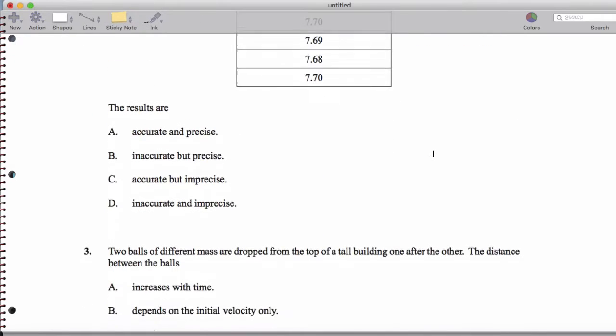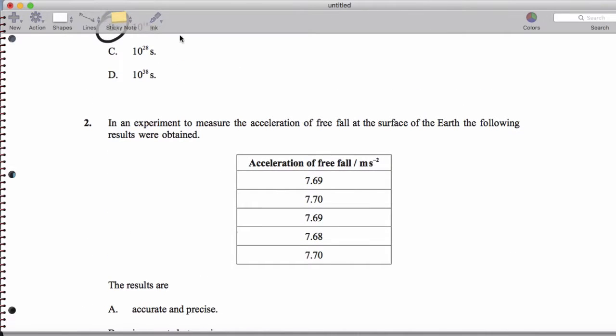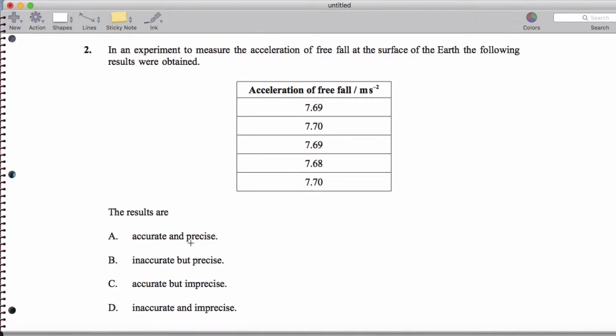And then in an experiment to measure acceleration of free fall at the surface of the earth, we get these consistent results. So we actually have very inaccurate results, but they are very precise.